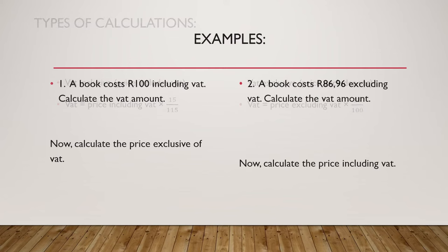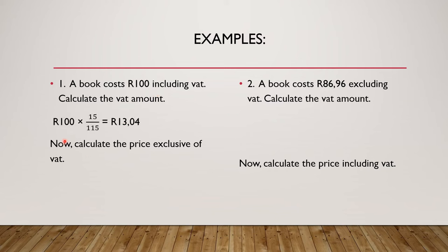An example: a book costs 100 rands including VAT. Calculate the VAT amount. So because this 100 rand is including VAT, when I'm calculating the VAT amount, I'm going to multiply by 15 over 115. So I'm going to say 100 times 15 divided by 115, and I get 13 rands 4 cents.